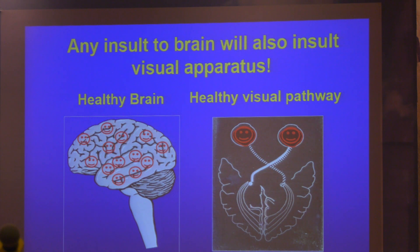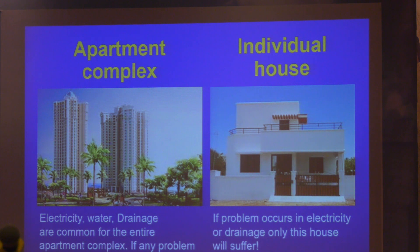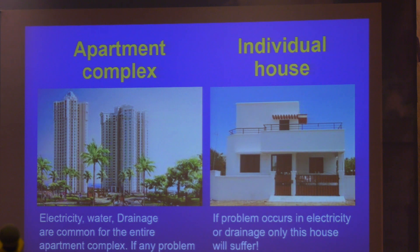Any insult in any form — whether congenital, injuries, inflammation, trauma, or degenerative demyelinating diseases — when it involves the brain, is likely to involve the eye also. Healthy brain is a healthy visual pathway, and unhealthy brain is unhealthy. I always teach my students: when you're in an apartment building with ten apartments sharing common drainage, common water supply, and common electricity — if one goes, every apartment suffers. So as a neurologist should know about ophthalmology, ophthalmologists should know about neurology and neurosurgery.